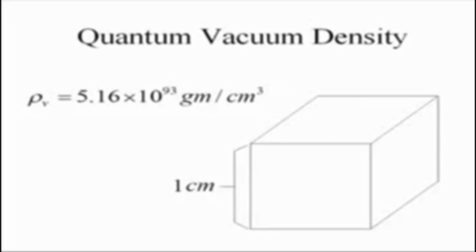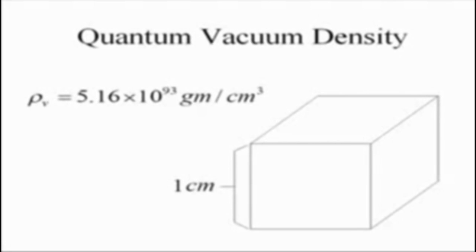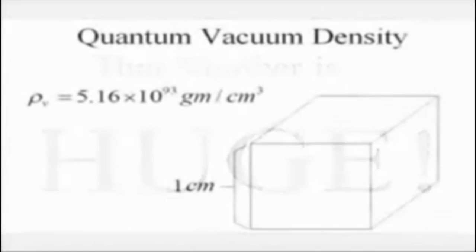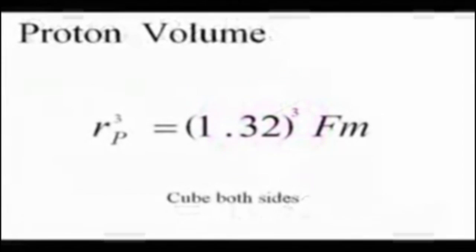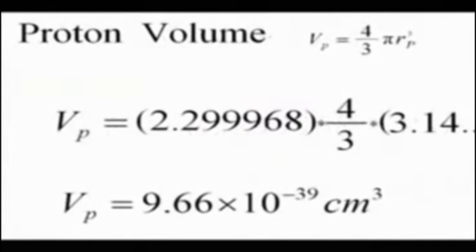It begins with the quantum vacuum density, which is a measured 5.16 times 10 to the 93rd grams per cubic centimeter. Then we calculate how much vacuum energy would exist inside of a proton, which has a radius of 1.32 femtometers, multiplied by 4 thirds pi r cubed, to get the volume.